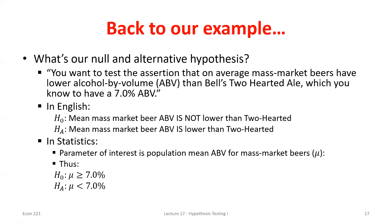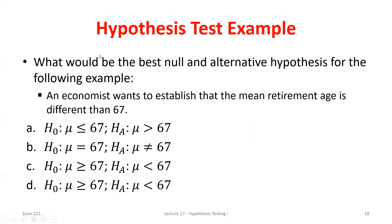We can only see one sample, so we calculate a sample mean. If the sample mean was 8.2%, that supports the null — 8.2% is evidence the true mean is greater than or equal to 7%, so we wouldn't reject. But if I see something like 6.2%, that goes against the null. The question is: is it far enough away from that assumed true value to reject the null hypothesis? That's what we're trying to figure out.